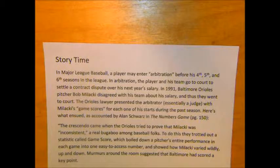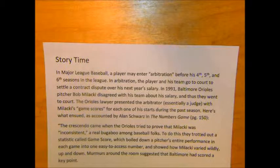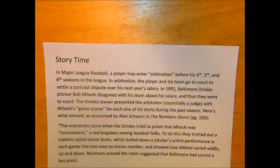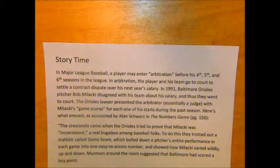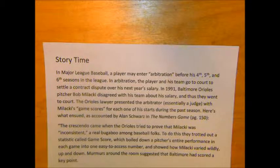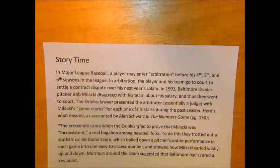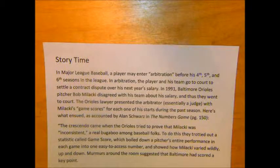The Orioles lawyer presented the arbitrator with Malacchi's game scores for each one of his starts during the past season. Here's what ensued, as accounted by Alan Schwartz in the book, The Numbers Game, on page 150. The crescendo came when the Orioles tried to prove that Malacchi was inconsistent. They trotted out a statistic called game score, which boiled down a pitcher's entire performance in each game into one easy-to-access number, and showed how Malacchi varied wildly up and down.